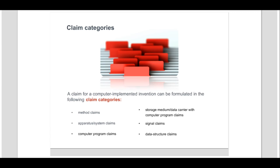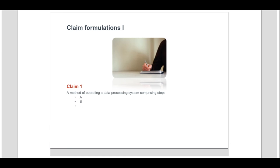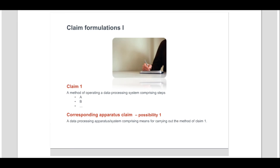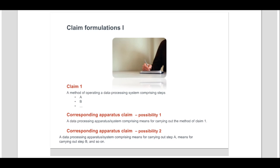Let us see now some possible claim formulations. If we define claim 1 as a method of operating a data processing system comprising steps A, B, and so on, a corresponding apparatus claim could be formulated as a data processing apparatus system comprising means for carrying out the method of claim 1. Another possibility would be to define the apparatus claim without any reference to the method claim by explicitly specifying all the means necessary to perform the invention — for example, a data processing apparatus system comprising means for carrying out step A, means for carrying out step B, and so on.